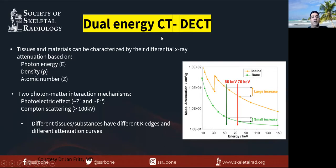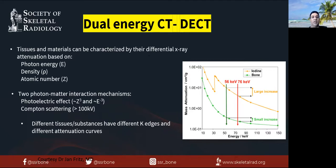Dual energy CT gives you all of that — volume rendered images, reconstructions, etc. — but it also leverages physics concepts. Tissues and materials can be characterized by their differential x-ray attenuation at two energies, typically 80 and 140 kVp or 100 and 140 kVp. These tissues and materials attenuate based on the photon energy used, the density of the material, and atomic number. There are two types of interactions occurring: photoelectric effect and Compton scattering.